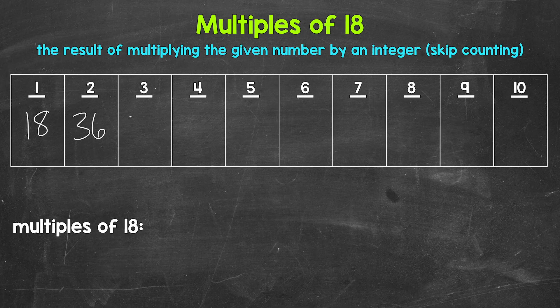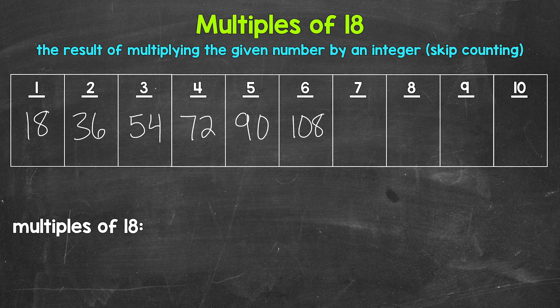4 times 18 is 72. 5 times 18 is 90. 6 times 18 is 108. 7 times 18 is 126.